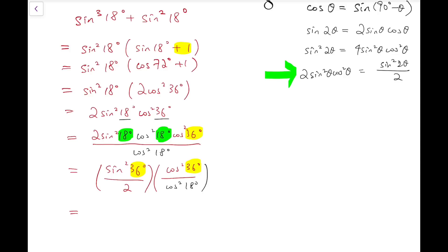Now from this, the numerator becomes a quarter of sine squared 72 degrees. And then the whole thing divided by 2 cosine squared 18 degrees.